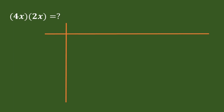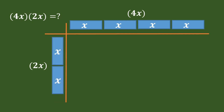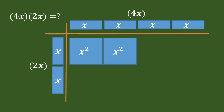Now let's do the operation. For example, we have 4x times 2x. To get the product using the tiles, let us first draw perpendicular segments. At the top of the horizontal segment, we have 4x — there will be 4 positive x tiles placed there. And to the left side, we put 2x, which is 2 positive x tiles. We multiply tile by tile: x times positive x equals x squared, x times positive x equals x squared, x times positive x equals x squared.